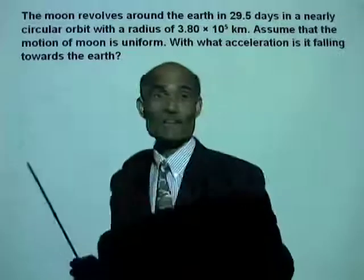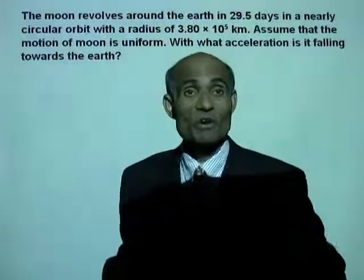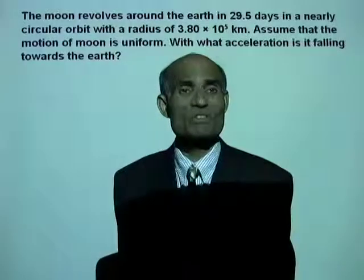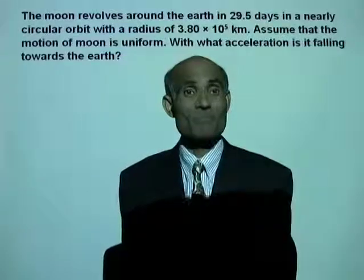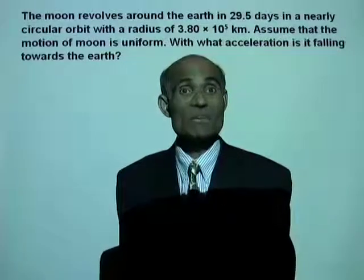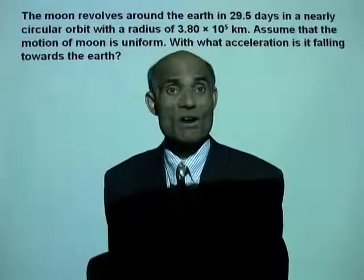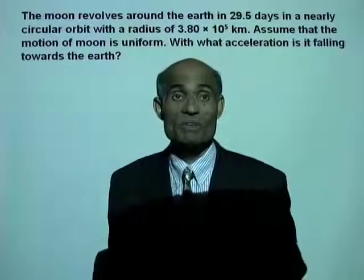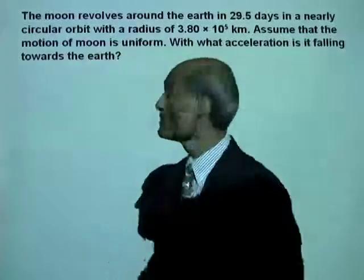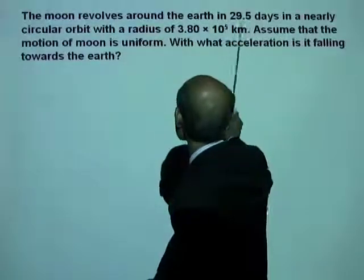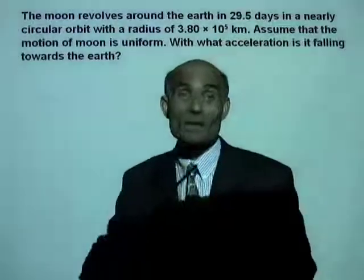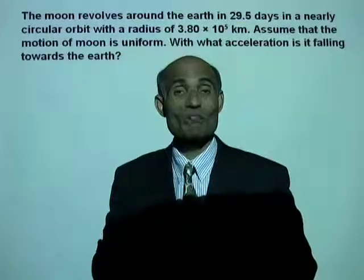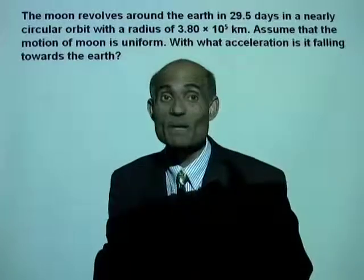We have the data and we know the equation for the centripetal acceleration: a equals v squared over r. But we don't know v, the linear speed — we only know the period. The time taken for one revolution is 29.5 days.